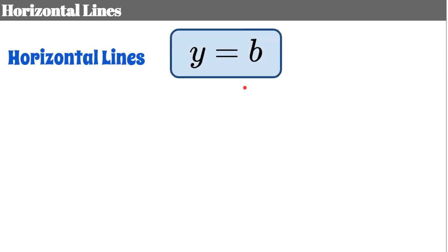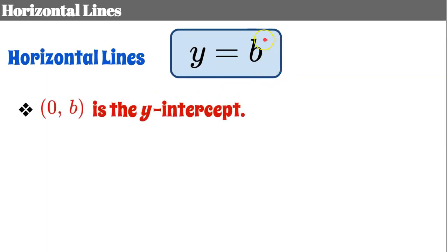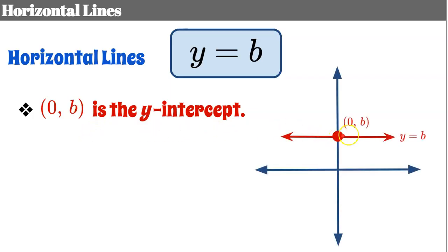That brings us to horizontal lines and vertical lines. Let's start with horizontal lines. We have y equals b, meaning the A in standard form was zero and eliminated the x term. We know that b is the y-intercept, giving us the ordered pair (0, b). So when we graph (0, b), it lies on the y-axis, making it the y-intercept. The line y equals b is a horizontal line passing through the y-axis at that y-intercept point.